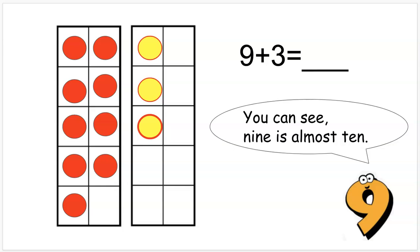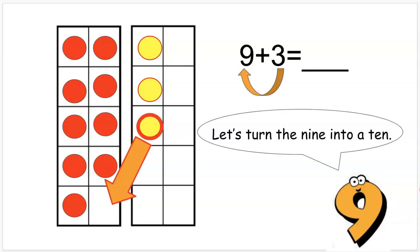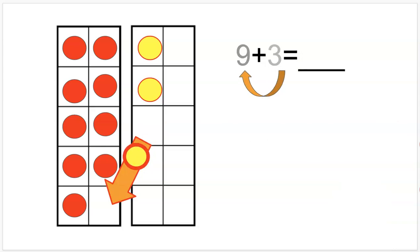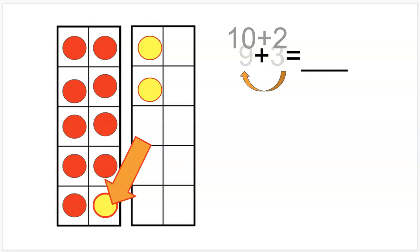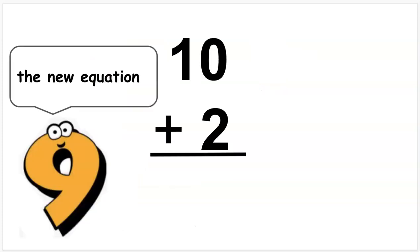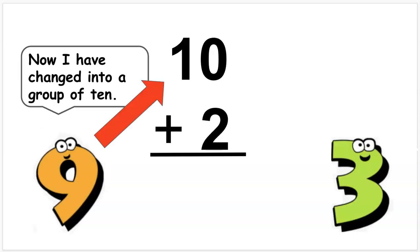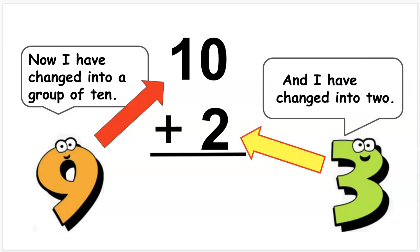You can see nine is almost ten. Let's turn the nine into a ten. Yay! The new equation: ten plus two. Now I have changed into a group of ten and I have changed into two.